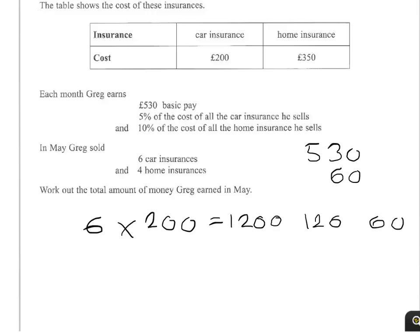Now for the home insurance — he gets 10%, but he's only sold 4 home insurances, so it's 4 times £350. Two £350s are £700, so four £350s will be £1,400. He gets 10% of that, which is £140.